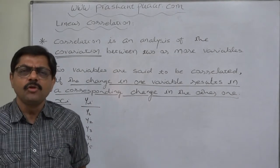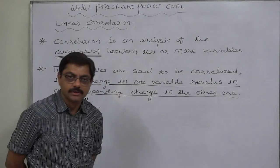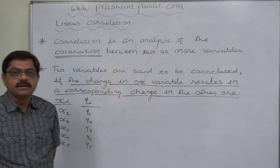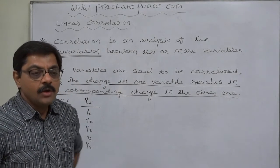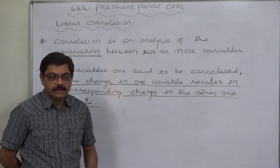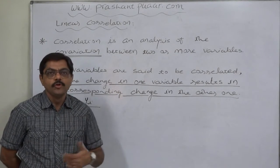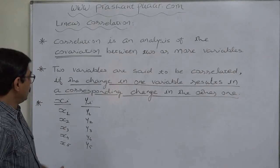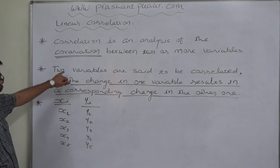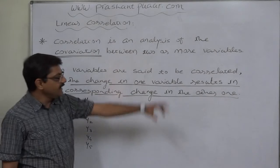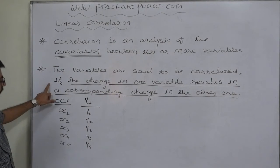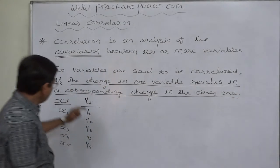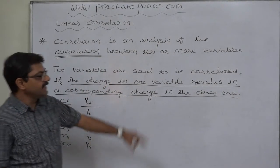But this is somewhat pure theoretical concept. From this type of definition actually we cannot understand anything about correlation. In statistics, when we go for numerical analysis, what do we mean by correlation? Numerically or statistically, two variables are said to be correlated if the change in one variable results in a corresponding change in the other one.